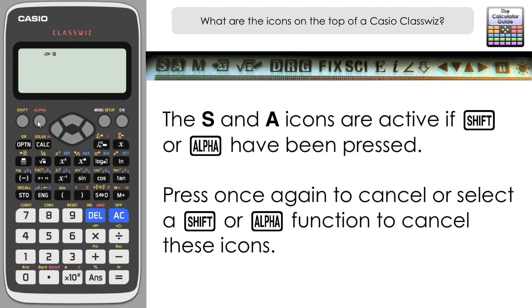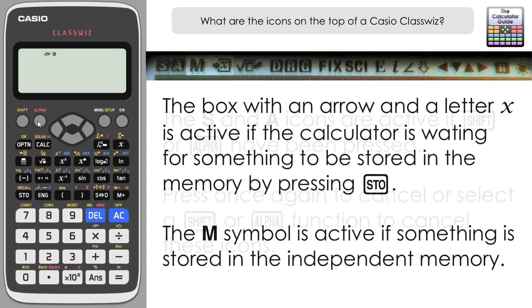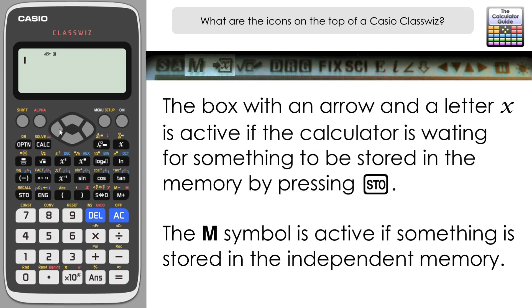Moving along, the next two symbols I'm going to look at together: we've got a large M, and what looks like a box with an X and an arrow going to it. This is all about storing things in the memory.